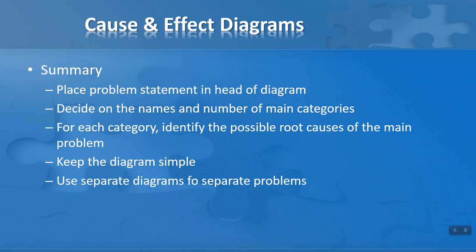I'm advising between four and six main categories, and for each of these categories identify the possible root causes of the main problem. You could have primary and secondary root causes. Keep the diagram as simple as possible and use separate diagrams for separate problems.